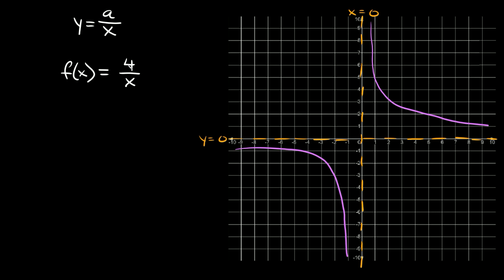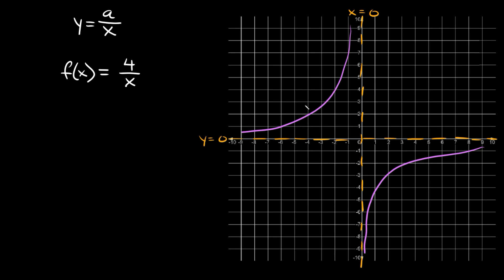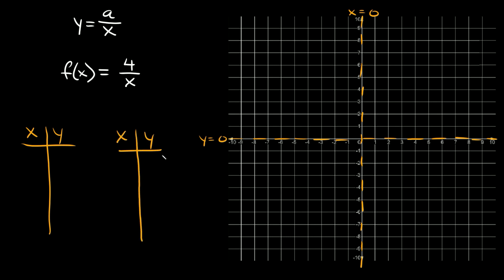This is called a hyperbola. If our a number is positive, it's going to look like that, and if the a number is negative, it would just be flipped. These parts are called branches. Now in order to graph this, we need to make two xy tables. In one table, we want to look at where our vertical asymptote is — here, x is equal to 0 — and pick some points to the left of it.